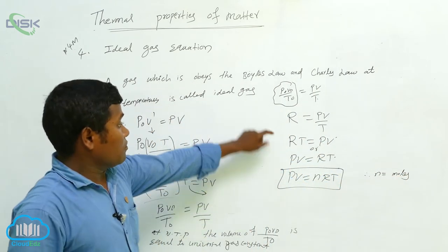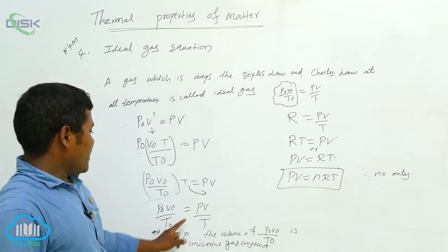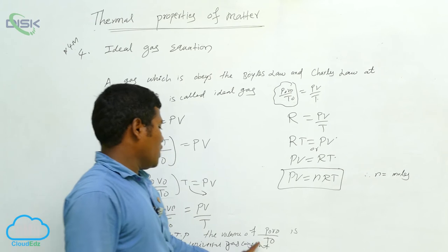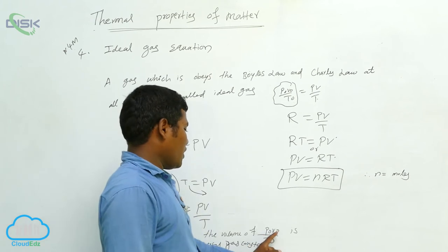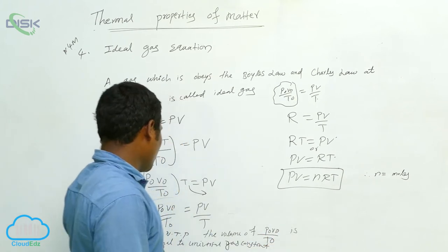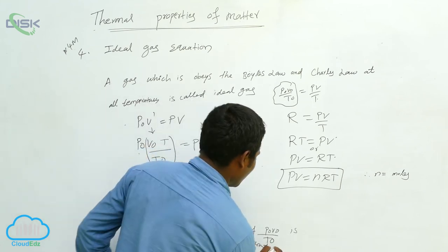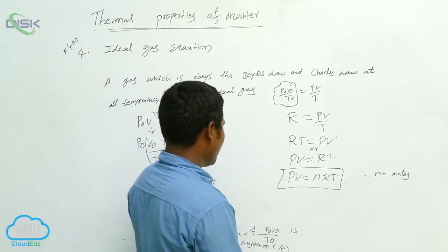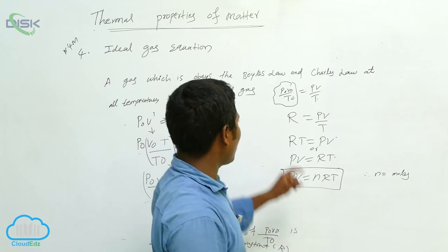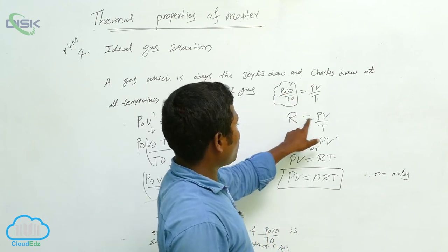So here P0 V0 by T0 is equal to PV by T. At NTP, P0 V0 by T0 is equal to the universal gas constant, that is capital R. In place of P0 V0 by T0, I am writing R. Then R is equal to PV by T, and bringing T to this side gives RT is equal to PV.